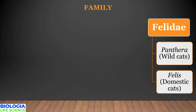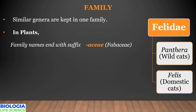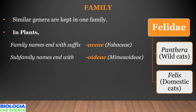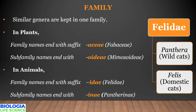The next category is family — a group of related genera with fewer common characters compared to genus and species. In plants, the family name ends with the suffix -aceae (e.g., Fabaceae), while the subfamily ends with -oideae (e.g., Mimosoideae). In animals, the family name ends with -idae (e.g., Felidae), and subfamily ends with -inae (e.g., Pantherinae). For example in plants, genera like Solanum, Petunia, Datura, and Atropa belong to family Solanaceae; in animals, genera Panthera and Felis are placed in family Felidae.